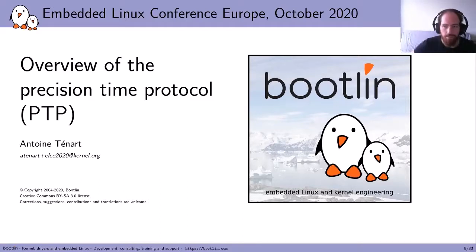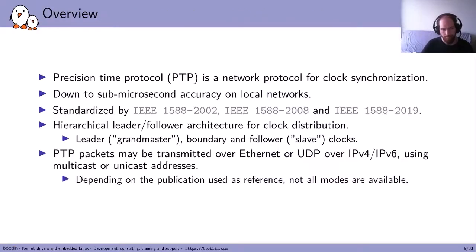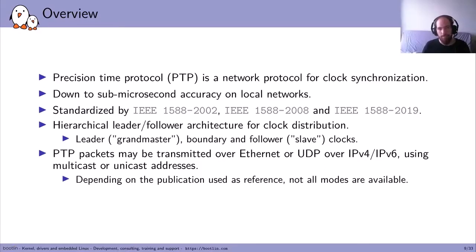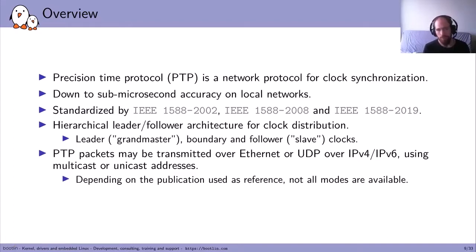Let's have a look at an overview of PTP — the Precision Time Protocol — to understand what it offers and get a high-level view of how it works on the network. PTP is also a network protocol for clock synchronization, but this time it provides sub-millisecond accuracy on a local network. That means the accuracy is much better than NTP, and that's why PTP can be used for various distributed applications. This protocol is standardized by the IEEE in three publications.